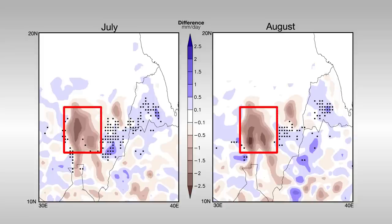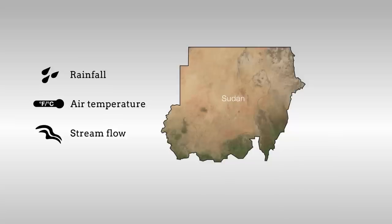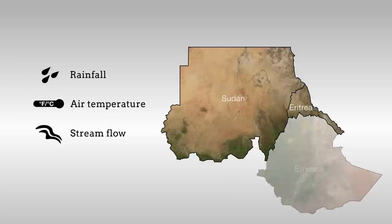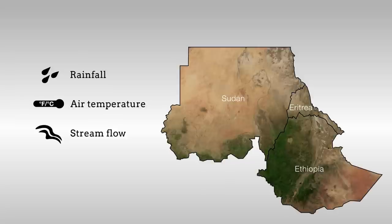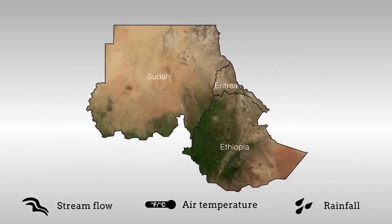For comparison with the modeled results, the researchers evaluated historical ground-based and satellite-derived data for rainfall, air temperature, and stream flow in Sudan, Eritrea, and Ethiopia from before and after a period of rapid irrigation development at Jazeera in the 1960s. The measurements suggest that large-scale intensive irrigation is responsible for a number of effects on the local climate.